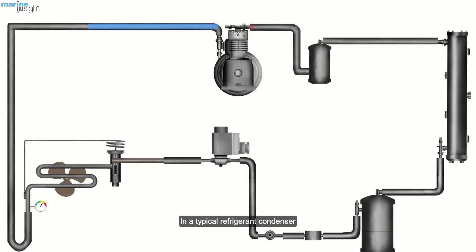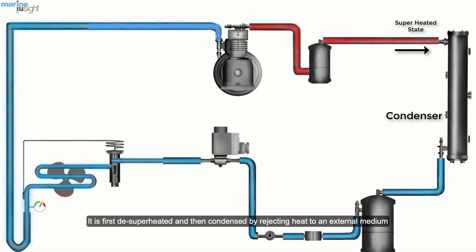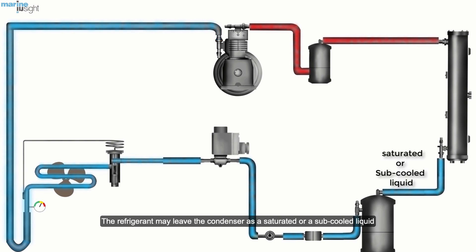In a typical refrigerant condenser, the refrigerant enters the condenser in a superheated state. It is first desuperheated and then condensed by rejecting heat to an external medium. The refrigerant may leave the condenser as a saturated or sub-cooled liquid, depending upon the temperature of the external medium and design of the condenser.